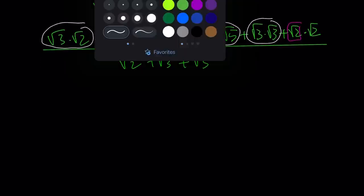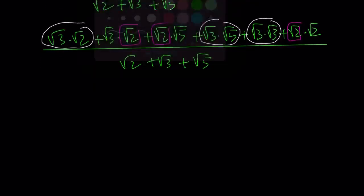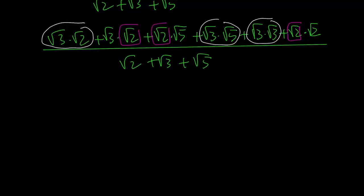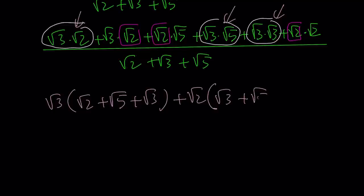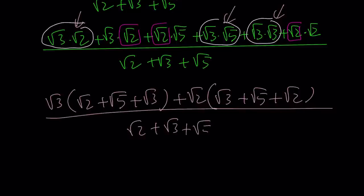We're going to have the first three terms. What is the common factor? It is root 3. So let's take it out. We're going to get root 2 plus root 5 plus root 3. Everything else has root 2 as a common factor. This gives us root 3 plus root 5 plus root 2. The whole thing is divided by root 2 plus root 3 plus root 5.